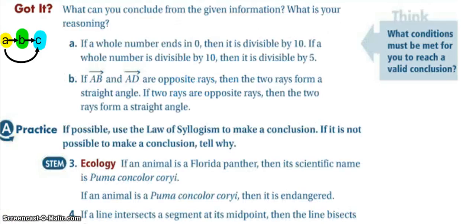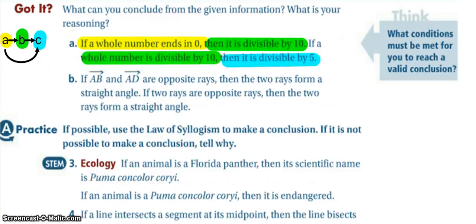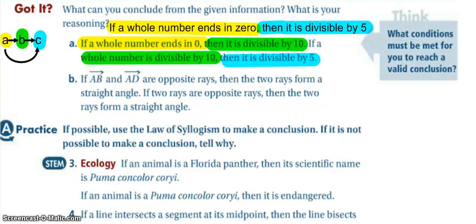Go ahead and look at the 'got it.' I'm using color coding: yellow for statement A, green for statement B, and blue for statement C. Notice that if A goes to B and B goes to C, then A can go straight to C. Pause the video to figure out what conclusions we can make. Our resulting conclusion here is: if a whole number ends in zero, then it is divisible by 5 — a good rule to keep in your back pocket, especially when we start factoring trinomials.